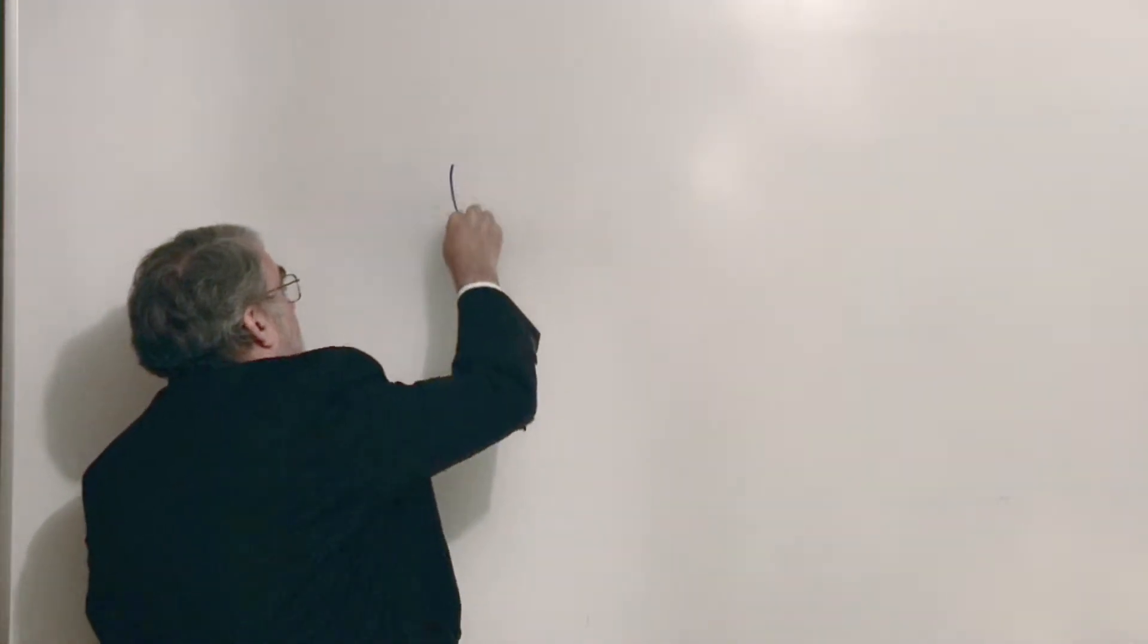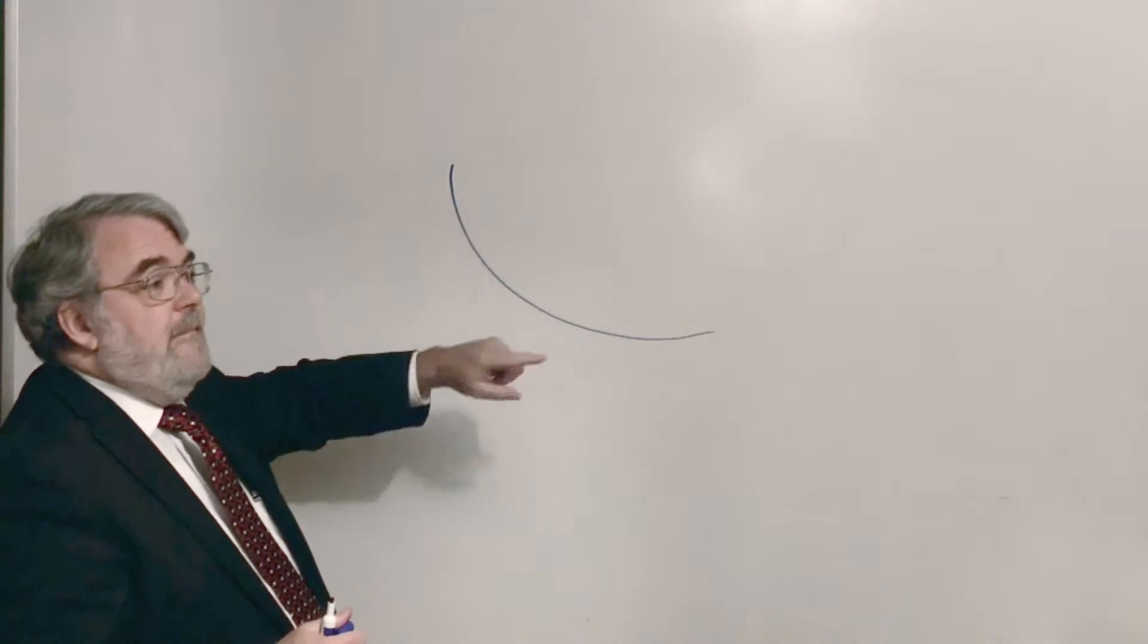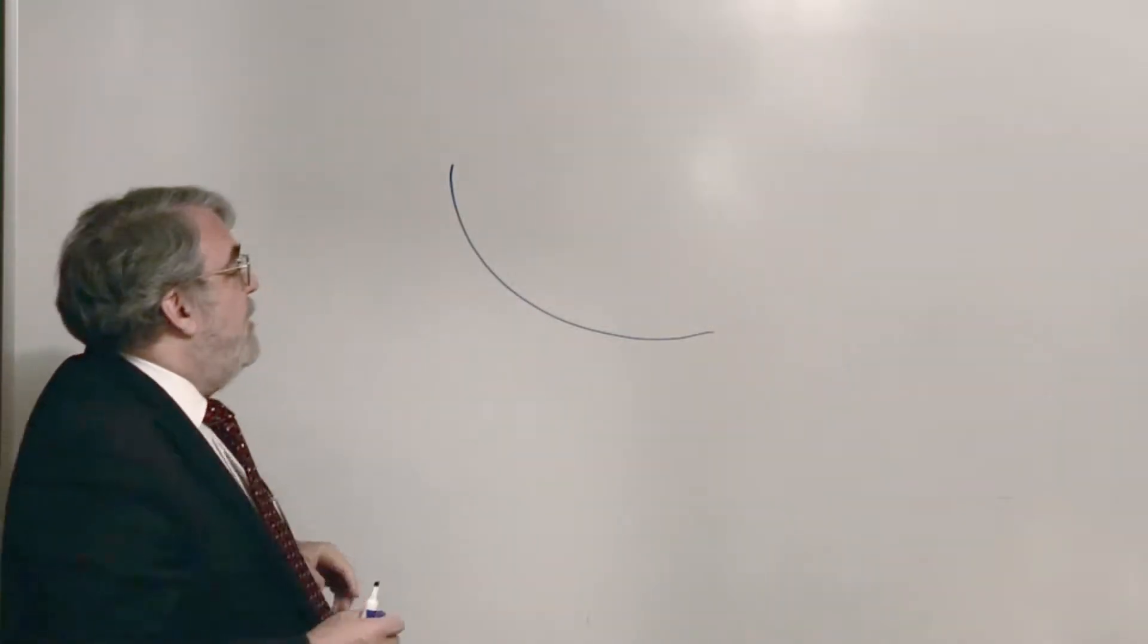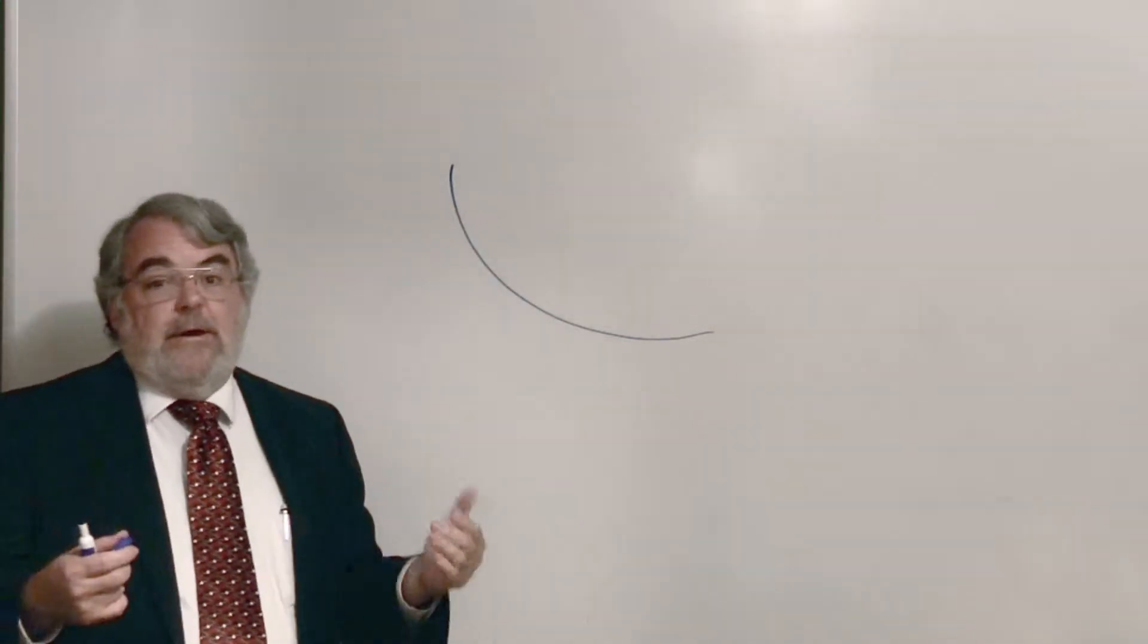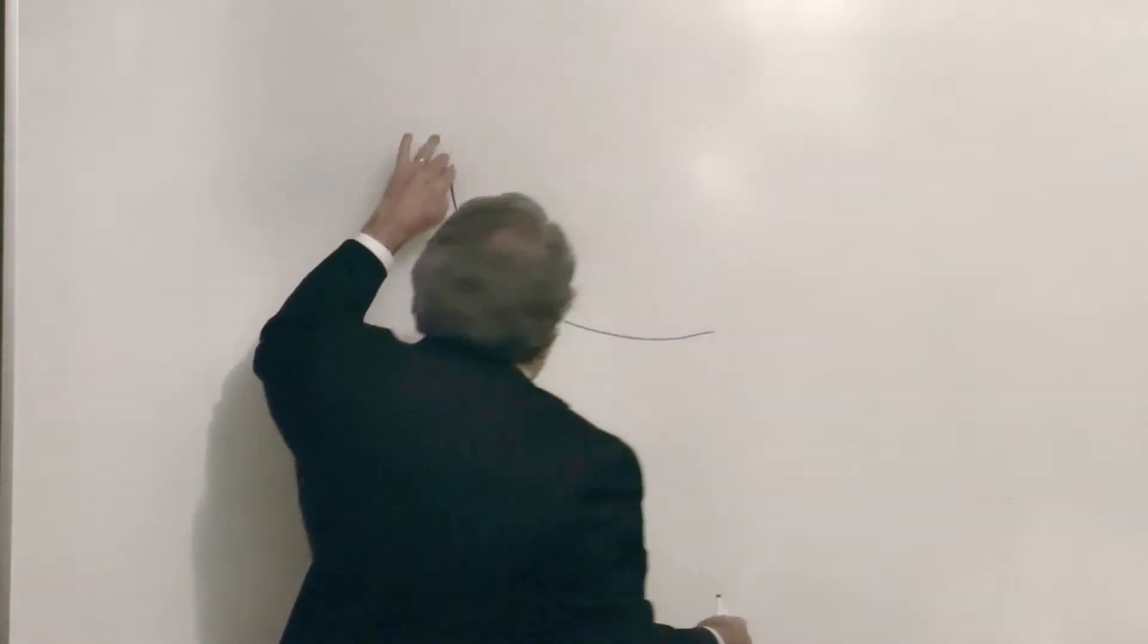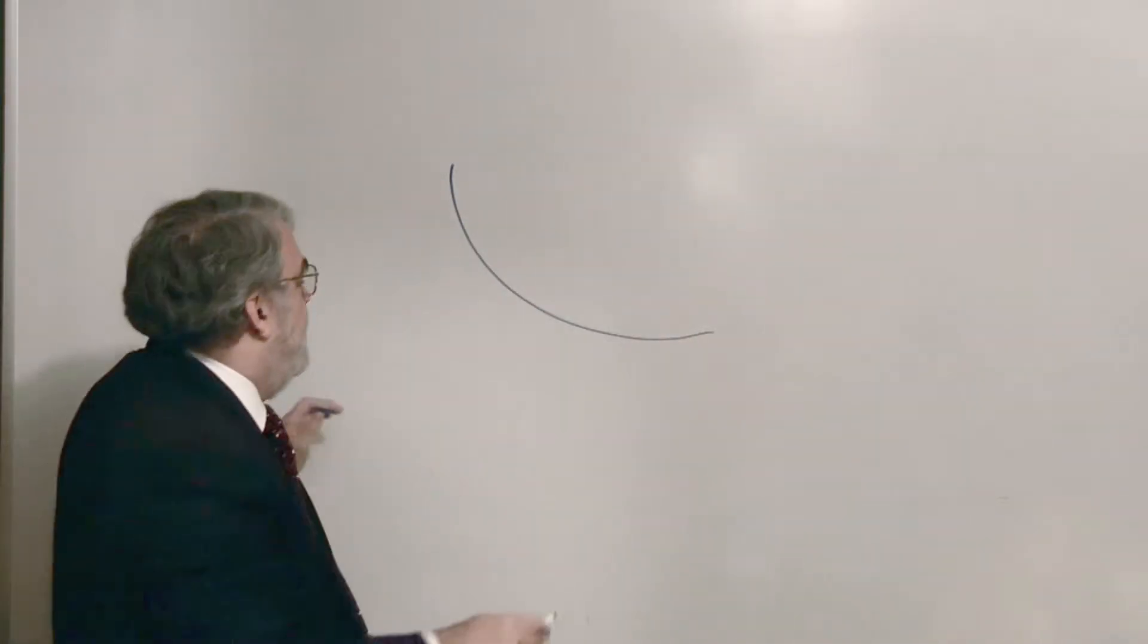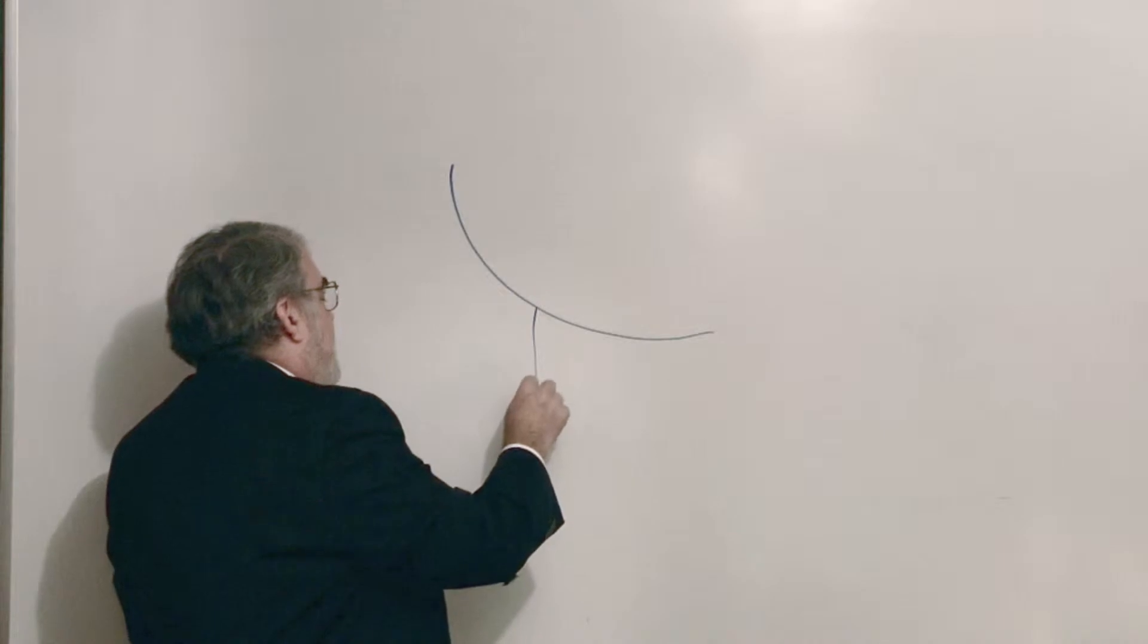If you take a parabola and if you rotate it, you form a dish. The dish is called a paraboloid. Now, technically, the parabola just keeps on going, but if you just rotate this part of a parabola, you'll form a dish, kind of like a satellite dish antenna.